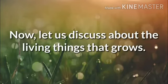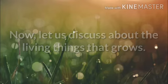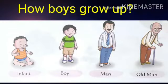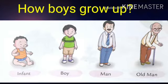Now let us discuss about the things that grow. How do boys grow up? Firstly, when a boy is born, he is an infant. An infant is a baby or a very young child. After that, he becomes a boy — a young male human. After that, he becomes a man, an adult male human being. And at last, he becomes an old man, which is the last stage of his life.